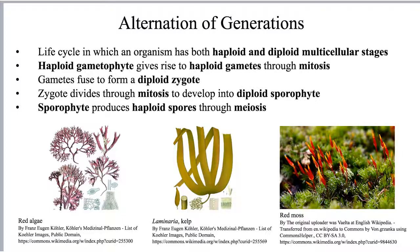Alternation of generations is seen in most plants and also in some members of the red algae and brown algae. This is a life cycle where an organism has a haploid multicellular stage and a diploid multicellular stage. Haploid refers to one set of chromosomes and diploid refers to two sets of chromosomes.